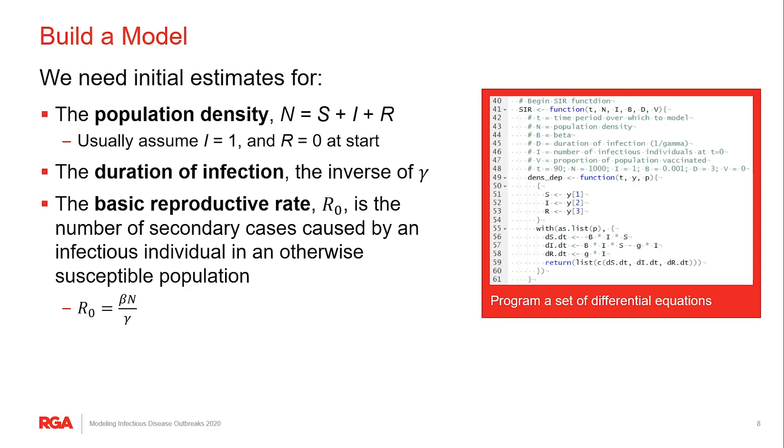So beta then is calculated from something called the basic reproductive rate of the disease. You'll also hear this called the R naught or R zero, R sub zero, depending on who you talk to. And what that is, is simply the average number of new cases that will be caused by patient zero over the course of their infection. And it's really just the starting value for that ratio that we were talking about earlier, because at the start, pretty much everybody is susceptible.